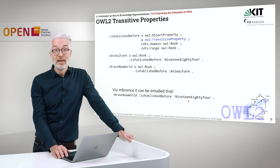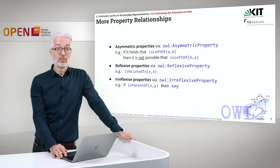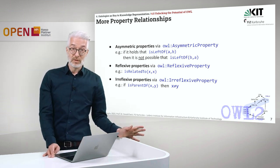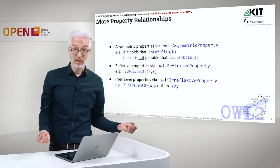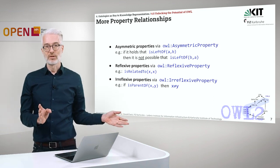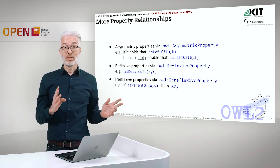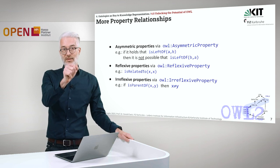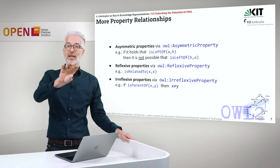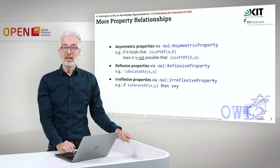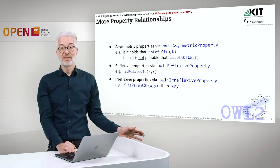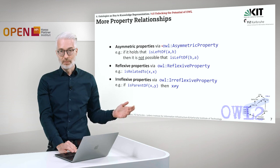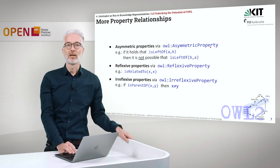We can also define properties to be asymmetric. Symmetric was the neighbor relation — it didn't matter whether we exchange the two connected things. But if I define something to be 'left of' something, then I cannot simply turn it around. If A is left of B, it's not possible that B is left of A too. I can declare this to be asymmetric using the OWL AsymmetricProperty keyword.